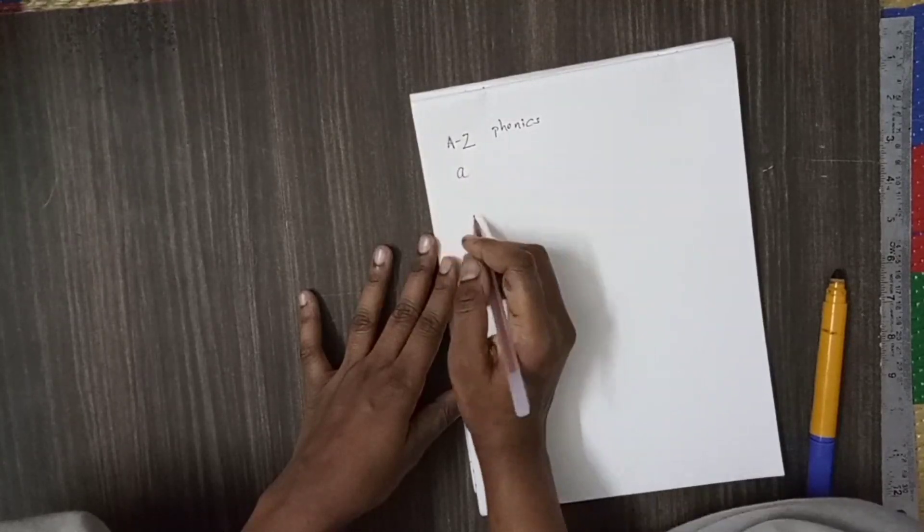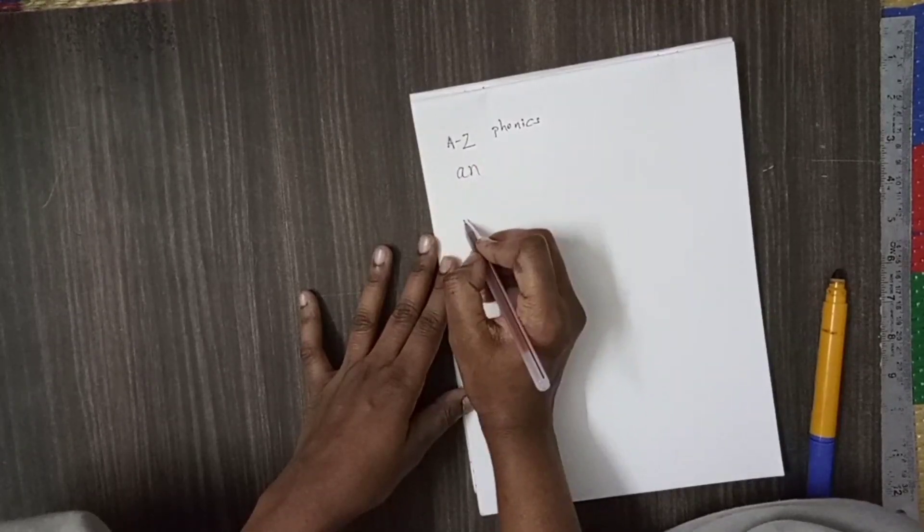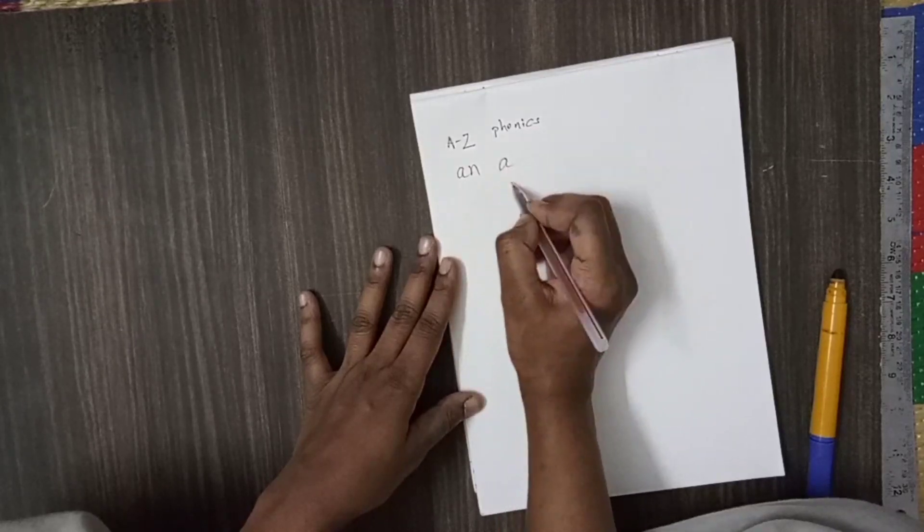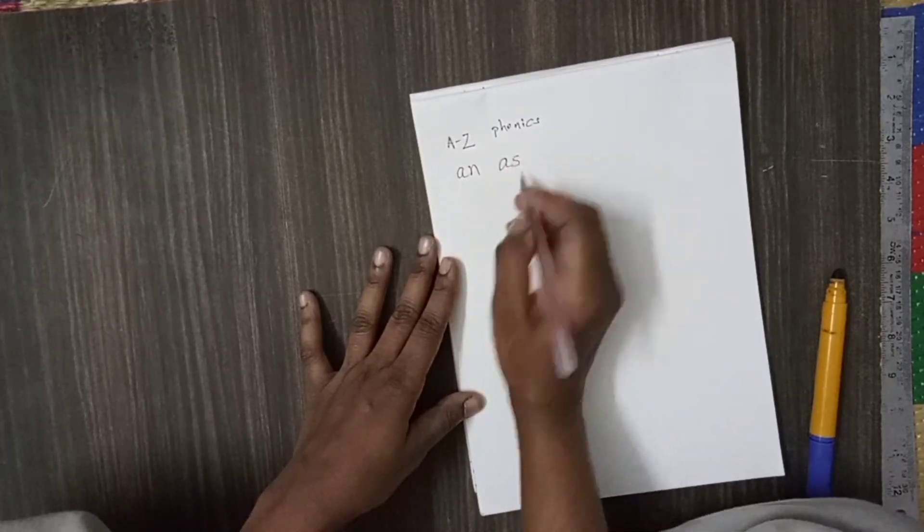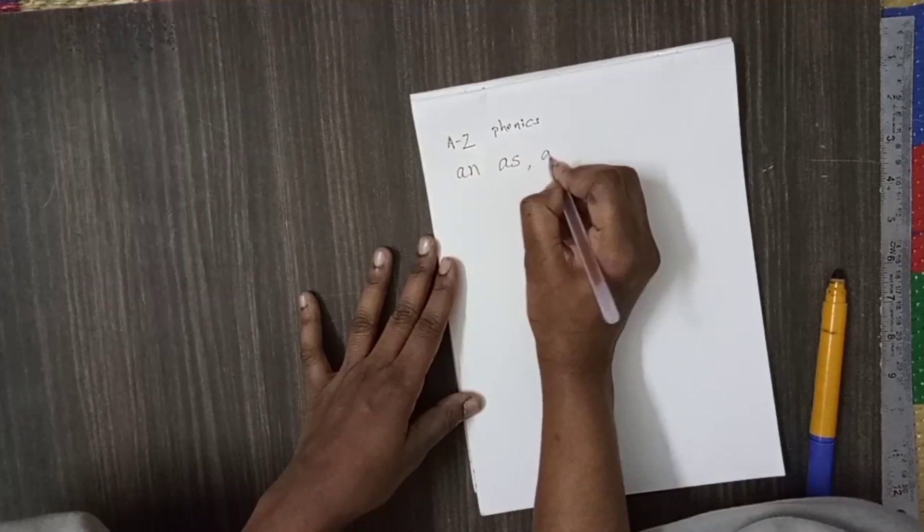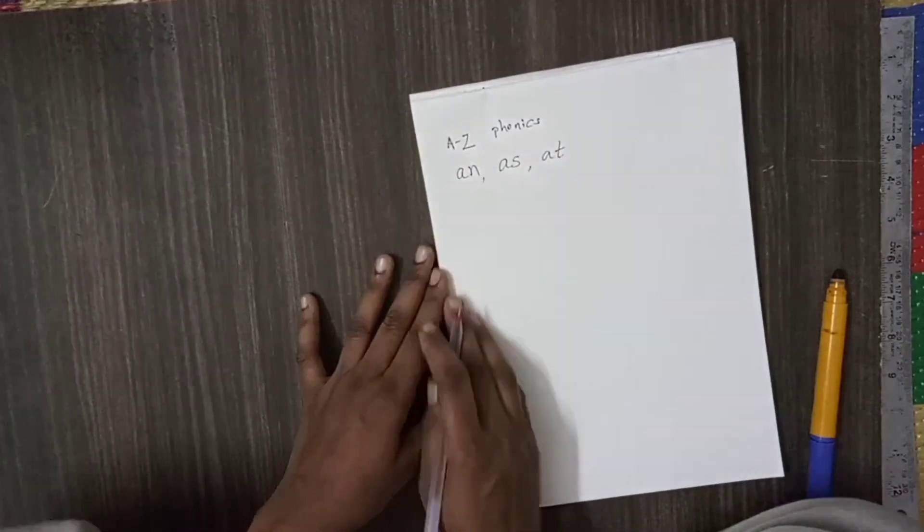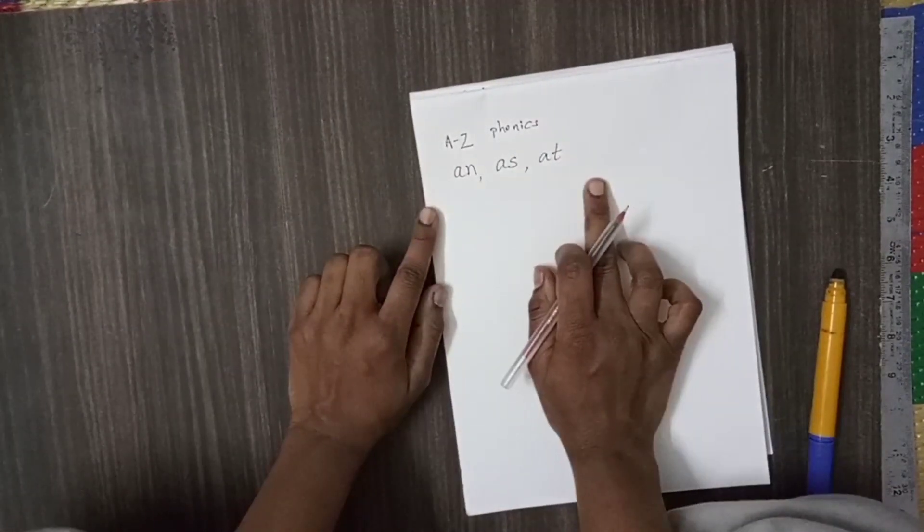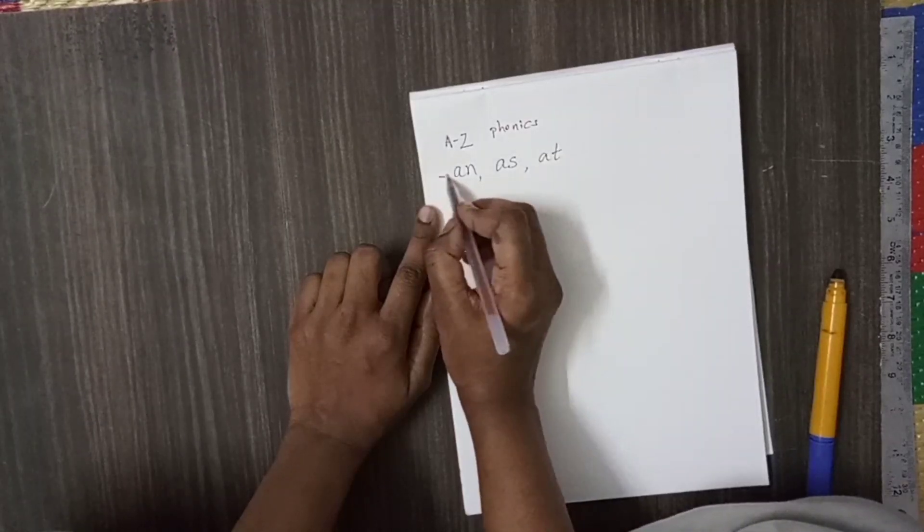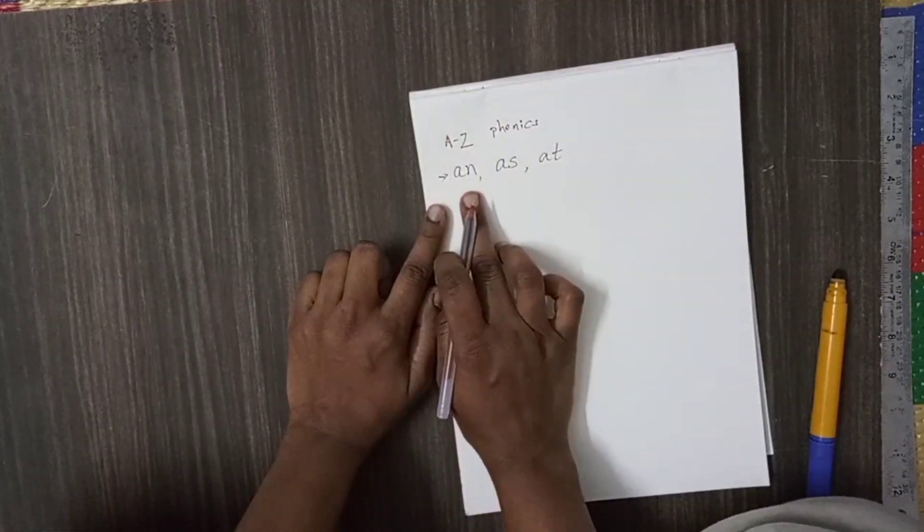Look here. For example, A, N, AN, A, S, AS, A, T, AT. Like this, they should be able to learn with all the vowels. Here, I have given only with A sound.